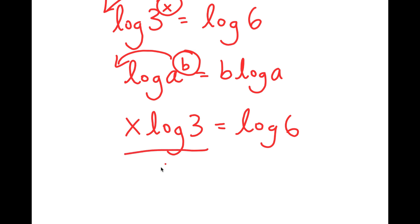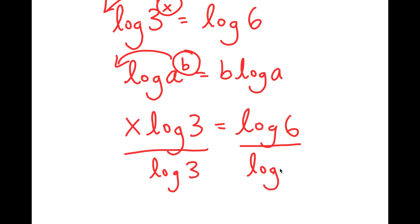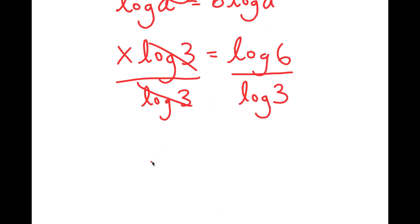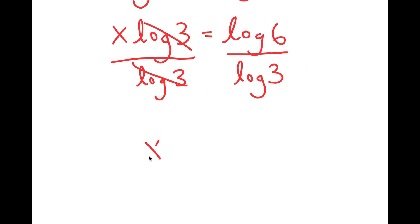From here, I can divide both sides by log 3, so these two cancel out, and I get x is equal to log 6 over log 3.